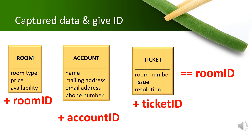Each data store will become a table in a database. From the database point of view, each table which is considered as a strong entity has to have its own primary key. The primary key is a unique identifier for a record in a table. Typically, an identifier or ID field is inserted. So in this case, room ID, account ID, and ticket ID are placed into these three entities. Another issue is the field called room number inside the ticket entity — it represents the ID for a room, so it is equivalent to room ID in the room entity.